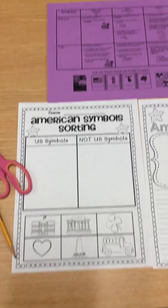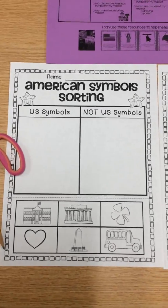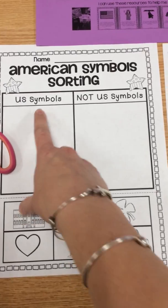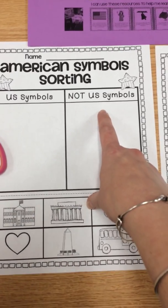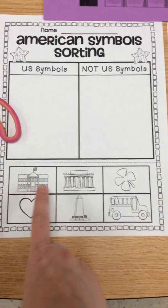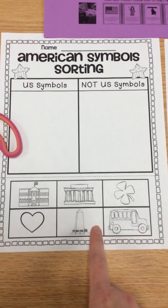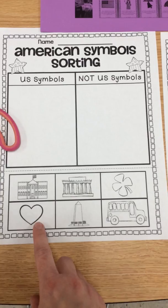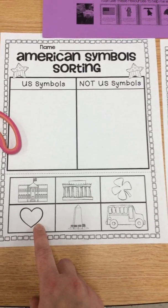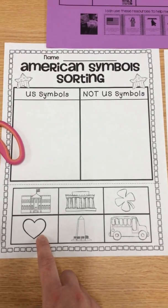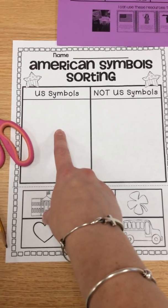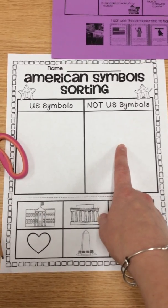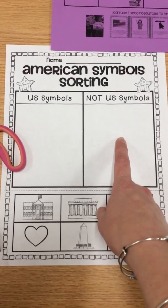The first thing you're going to do is get out this sorting paper. It says U.S. symbols and not U.S. symbols. Your job is to look at these pictures — you're going to cut them out and glue them where you think they belong. Do you think a heart is an American symbol? If you think the heart is a U.S. symbol, you're going to put it here, but if it's not, you're going to put it here. Think hard, because I'm not really sure if a heart represents the U.S.A.